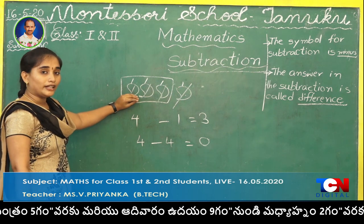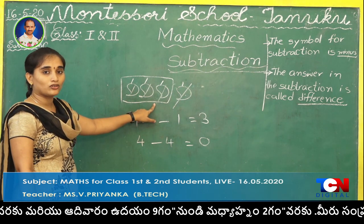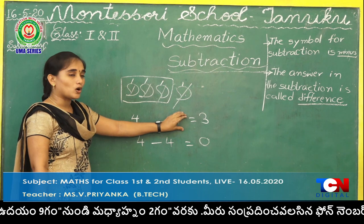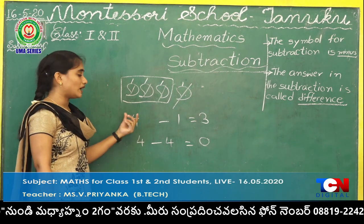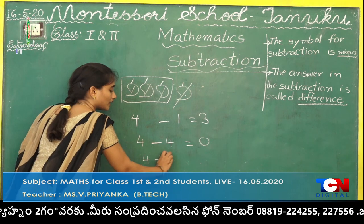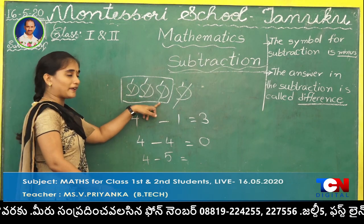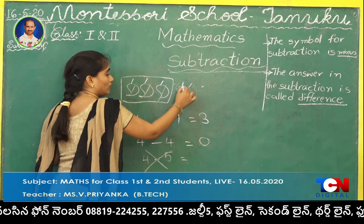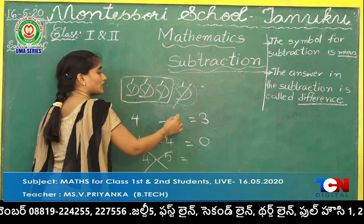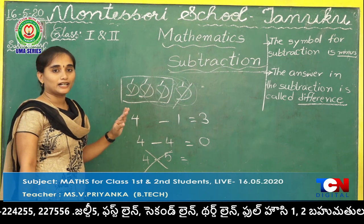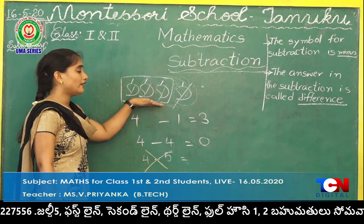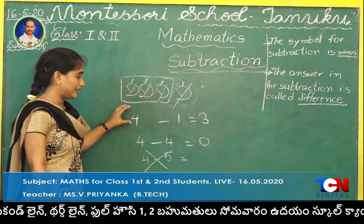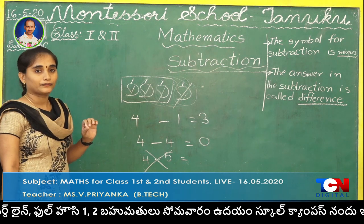Can you take 5 mangoes from these 4 mangoes? No. Always the smaller number must be subtracted from a bigger number. I can take 1, 2, 3, or all 4 mangoes, but I can't take more than 4. Always the smaller number must be taken away from the bigger number.